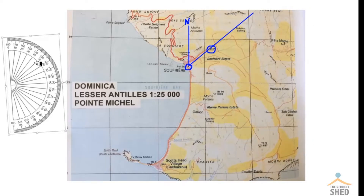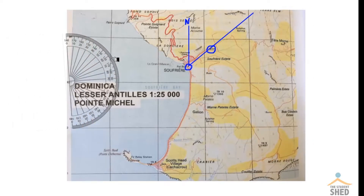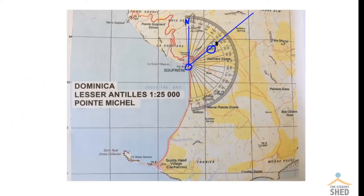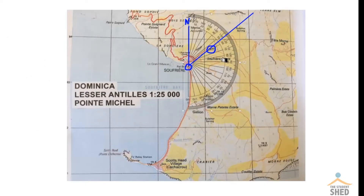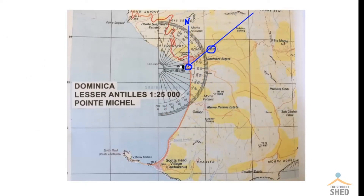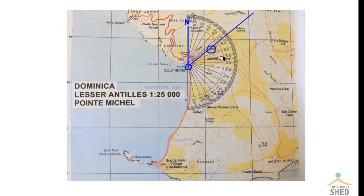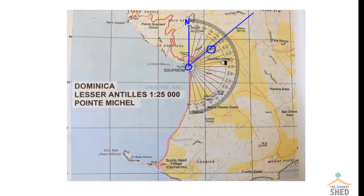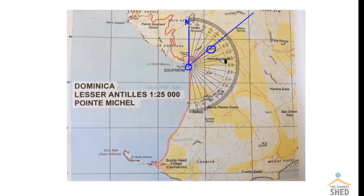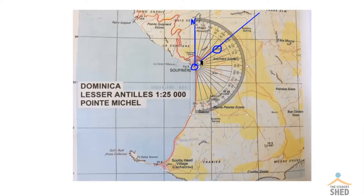Once we've done that, we can now move the protractor over to the map. Make sure that the zero on the protractor lines up with the north-south line that goes through the police station. We also want to make sure that the intersection on the protractor lines up with the police station.